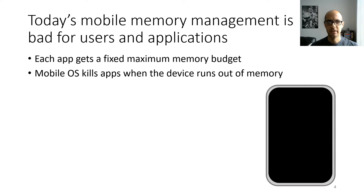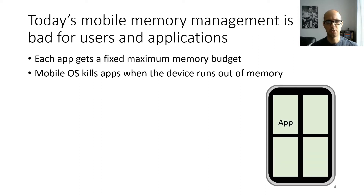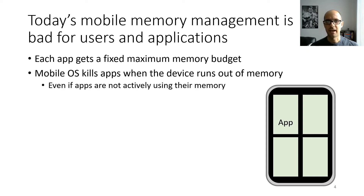Today's mobile memory management is bad for both users and applications. On both Android and iOS, each app gets a fixed maximum memory budget, and the operating system kills apps when the device runs out of memory. So if you have a phone with two gigabytes of RAM and each app is allowed a 512 megabyte memory budget, starting up four apps fills your phone's memory entirely, and if you want to start a fifth app, your phone is going to have to start killing apps.